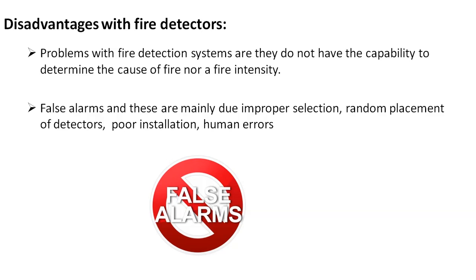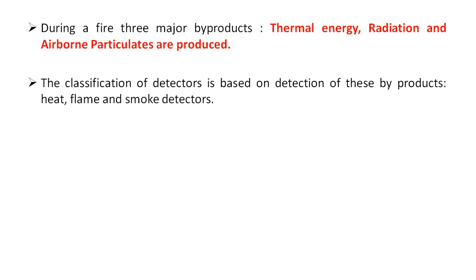A major disadvantage with fire detectors or fire alarm systems is false alarms. A false alarm is a fire alarm signal initiated by the fire detector or fire alarm system when no fire is present. These are mainly due to improper selection of detectors, random placement of detectors, poor installation, and human errors.